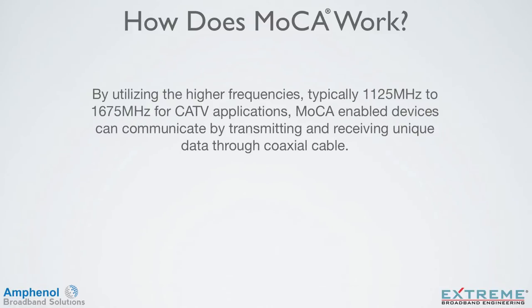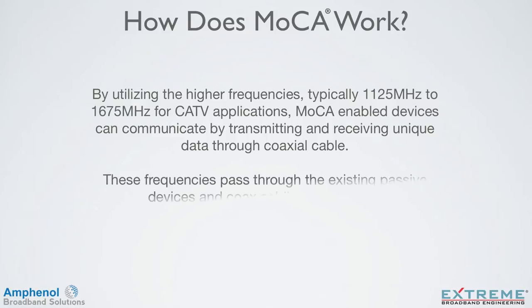MOCA uses some very high frequencies, typically 1125 to 1675 MHz for cable TV applications. MOCA-enabled devices can communicate by transmitting and receiving unique data through the coaxial cable. These frequencies pass through the existing passive devices and coaxial cabling in the home.